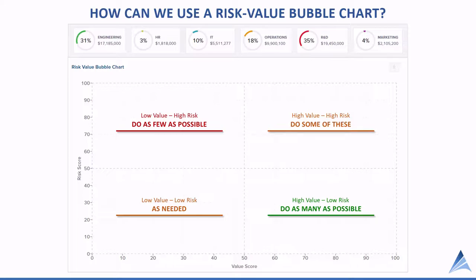In the lower left, we have low value and low risk. These tend to be our operationally based projects that run the business or keep the lights on. We want to do those as needed, but we want to be careful not to overload our portfolio with low value, low risk projects.